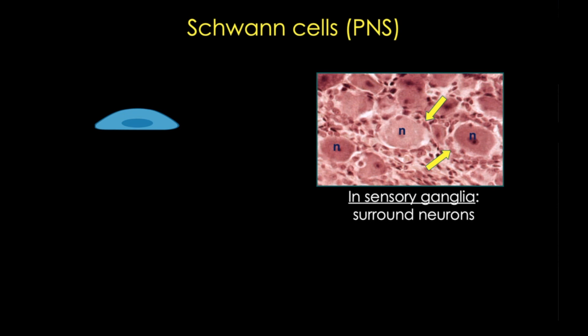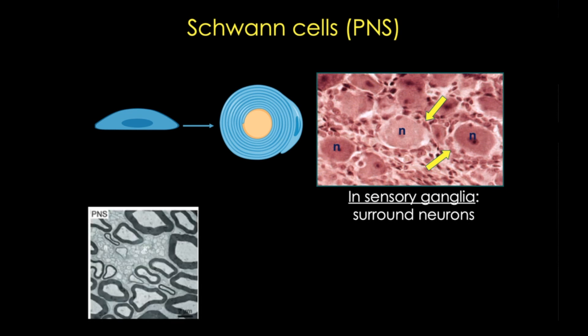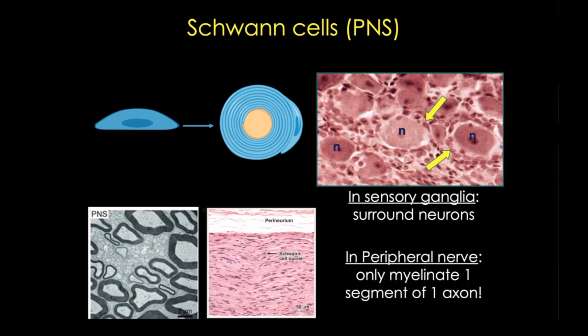Now in all peripheral nerves, Schwann cells ensheath axons, and in larger axons, they function just like oligodendrocytes to myelinate these axons. But interestingly, they only myelinate one segment of one axon. So here you can see an H&E stained image of a peripheral nerve with the Schwann cell nuclei.